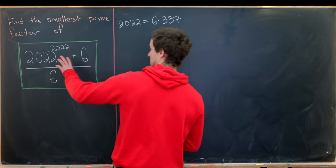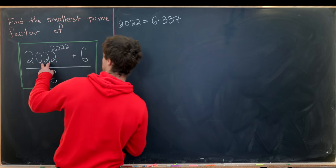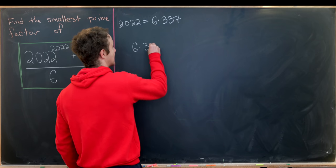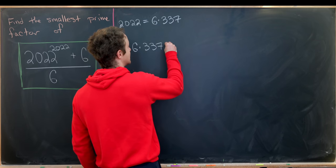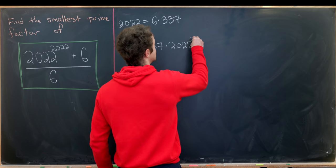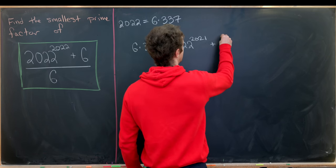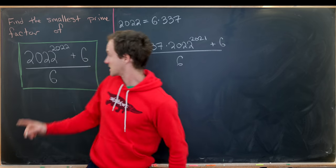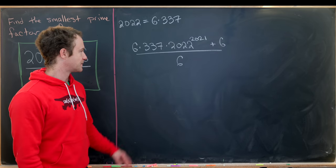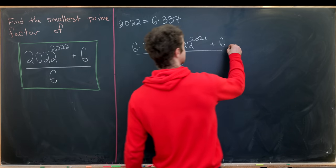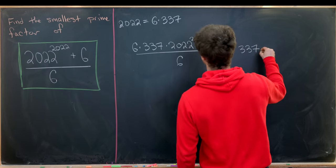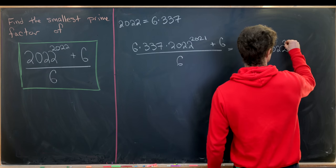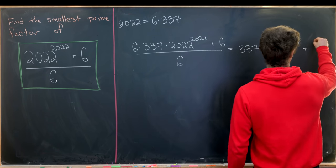Okay, so we can take this 2022 to the 2022 and rewrite it as 6 times 337 times 2022 to the 2021 plus 6 over 6. So I just factored one copy of 2022 out. But now I can cancel these sixes, and I have 337 times 2022 to the 2021 plus 1.